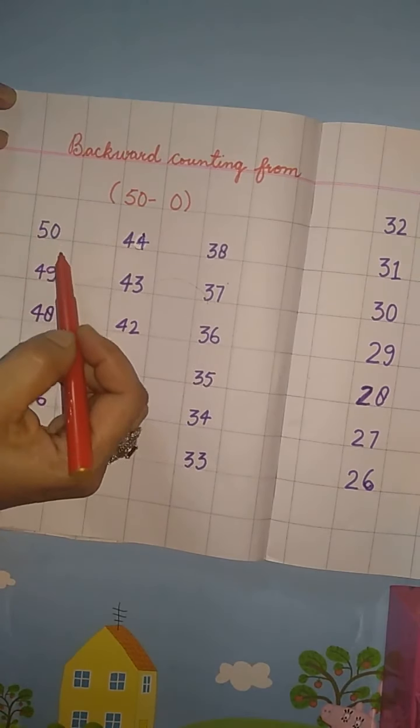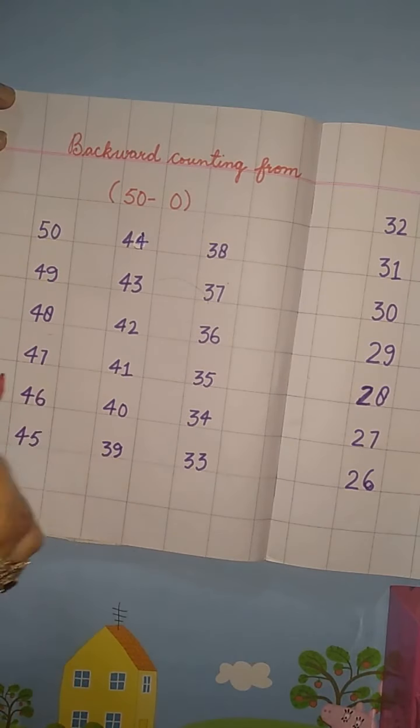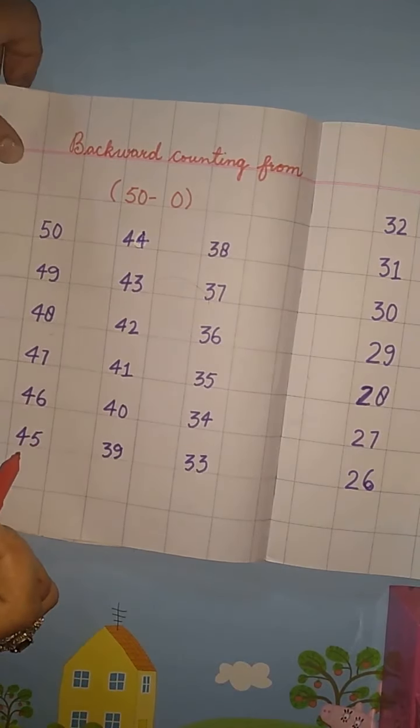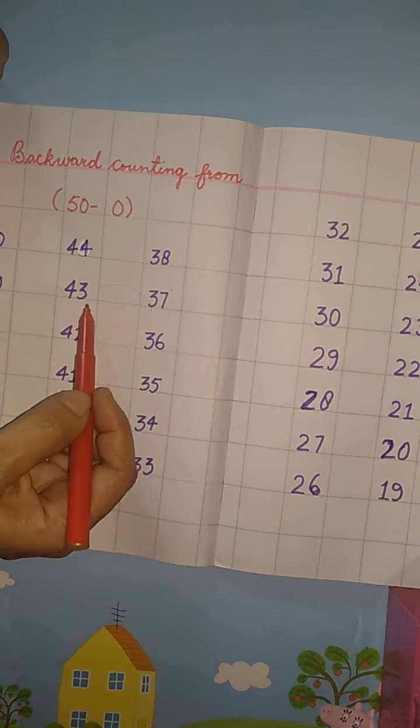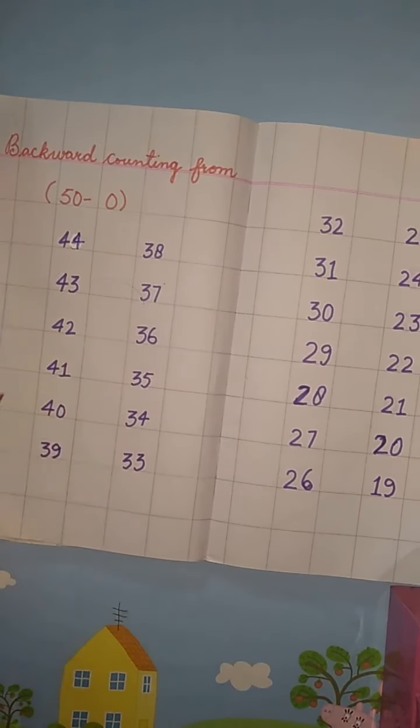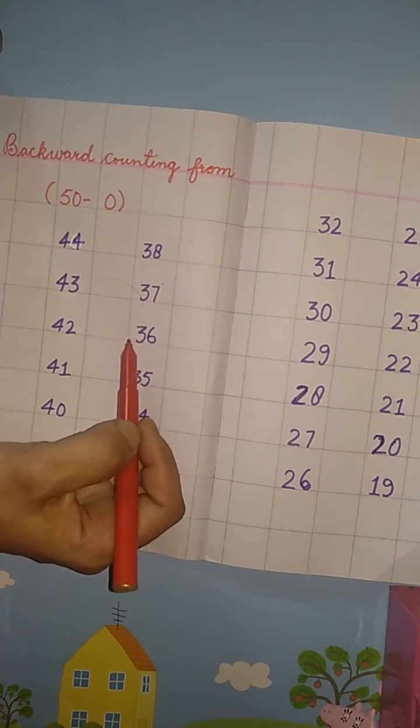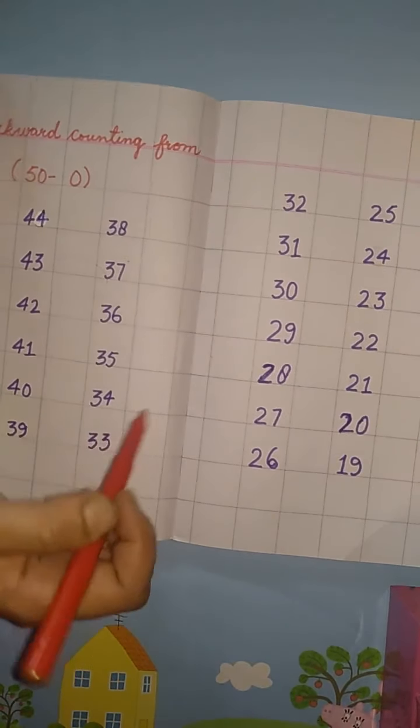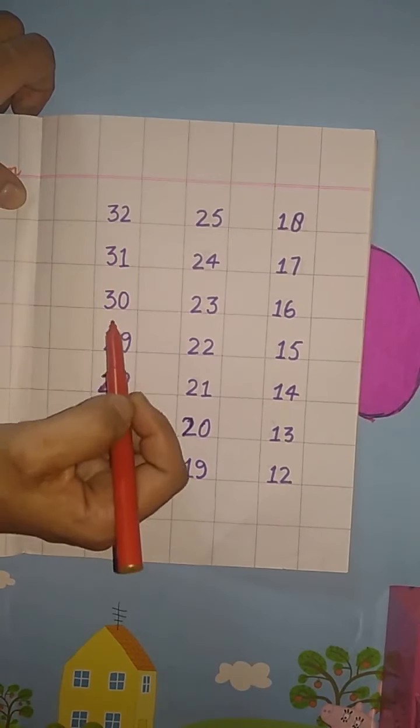50, 49, 48, 47, 46, 45. Keep counting with me. 44, 43, 42, 41, 40, 39, 38, 37, 36, 35, 34, 33, 32, 31, 30.